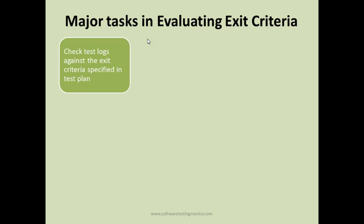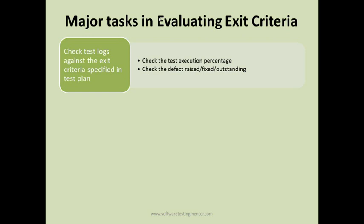You check the test logs — the test log shows your test execution percentage. You check defects raised, fixed, and outstanding against the criteria specified in the plan. Exit criteria would be something like: minimum 95% of test cases should have been executed to exit the functional test cycle, and all high and severe defects need to be fixed and verified to exit the test cycle.